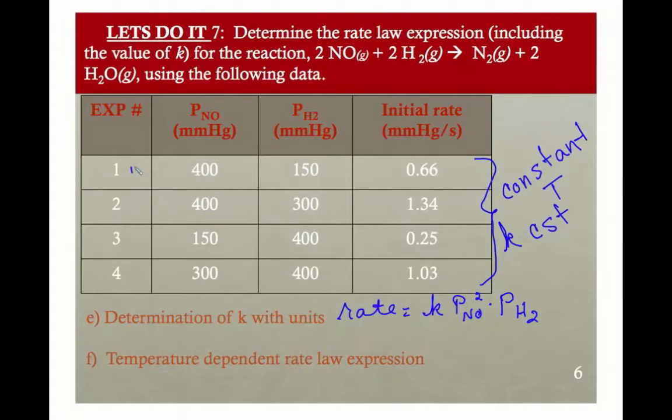I'm going to use the first one, but you're welcome to try two, three, or four, and see that you get pretty much the same number within any reasonable experimental error. So I'm going to plug in for rate 0.66 equals K, my unknown. I know my partial pressure of NO. It's 400 squared times 150. And if you do that algebra, you get 2.75 times 10 to the minus eighth as your final answer there.